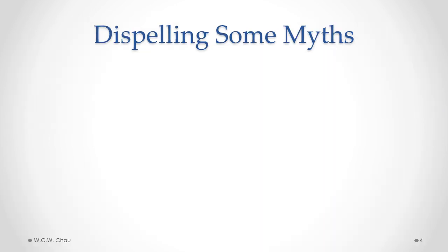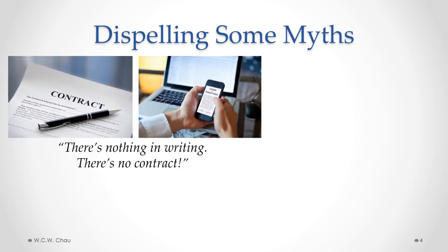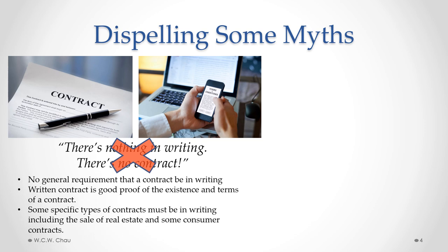Before we start delving into some of the legal aspects about forming contracts, I first wanted to dispel some common myths about contracts. The first myth is that if there's nothing in writing, there's no contract. That is a myth — that is not true. There is no general requirement that a contract be in writing. Having it in writing is usually a good idea because it provides an easy way to prove that a contract was formed and also to prove the exact terms of a contract. That does not mean that you need a written contract to have a valid contract. A contract can be formed verbally without anything in writing.